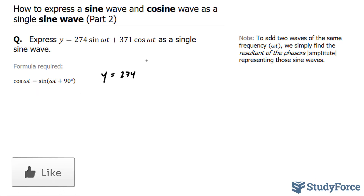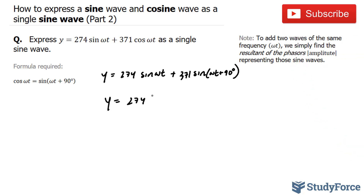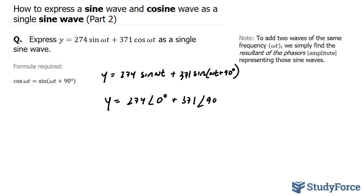Y is equal to 274 sine omega t — notice that this hasn't changed — plus 371 sine omega t plus 90 degrees. Now that you've written this equation, to add two waves of the same frequency — notice that these have the same frequency omega t — we simply find the resultant of the phasors, which are the amplitudes representing those sine waves. I'll rewrite these in terms of amplitude and angle: y is equal to 274 at an angle of 0 degrees plus 371 at an angle of 90 degrees.